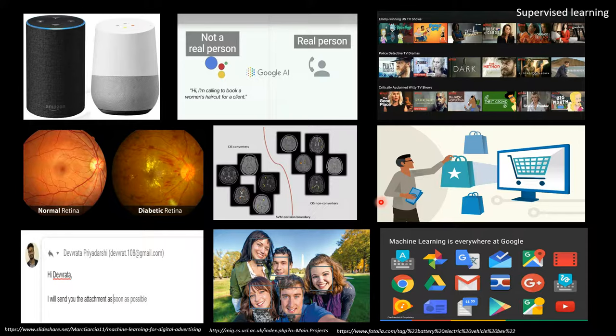It has been quite successful as we can see from a lot of industrial applications that we are using nowadays, either it's your smart speaker like Amazon Alexa or Google Home, or your personal assistant, for medical diagnosis, or even your auto mail completion and recommender systems. All of this somehow uses some kind of supervised learning.